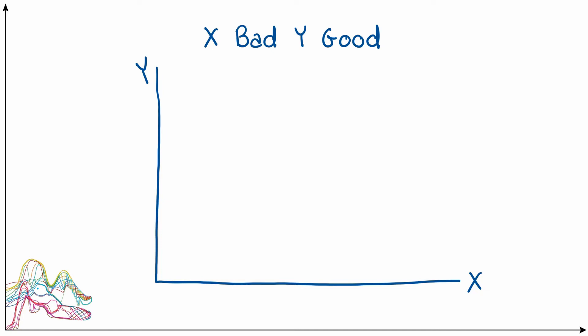Now let's think about the case where X is the bad and Y is the good. Starting at an arbitrary point of consumption, if we increase our amount of X without changing Y — since X is a bad, this makes the consumer less happy. To bring the consumer back to the original level of utility we have to compensate with something that makes them happy, which is more of good Y. So indifference is a coupling of more X and more Y, giving a new point of indifference up and to the right. Because of diminishing marginal utility and increasing marginal disutility, we get an upward-sloping indifference curve.